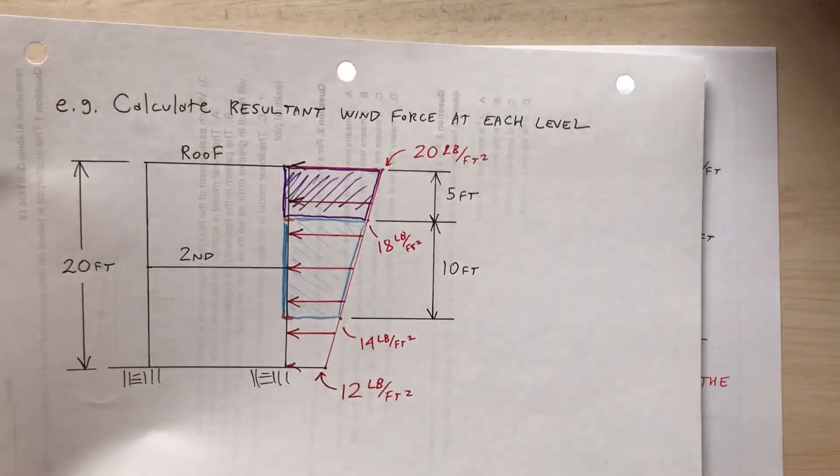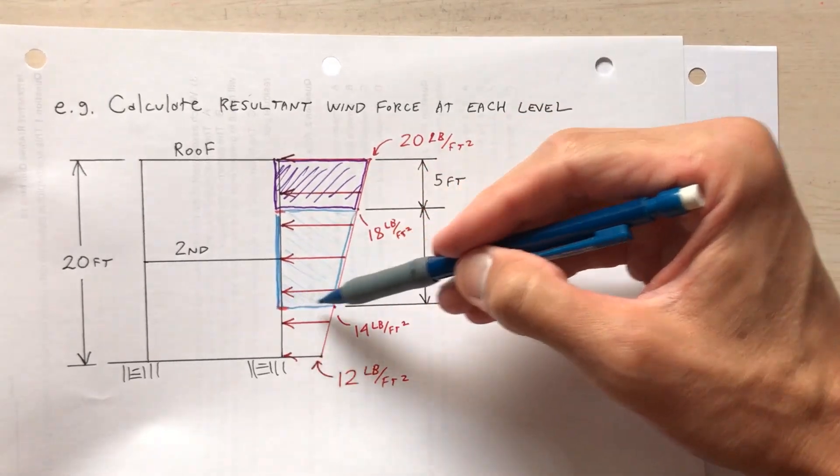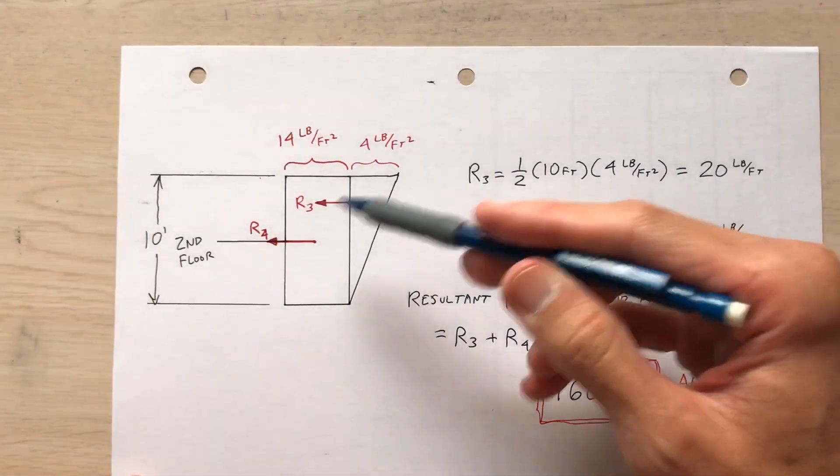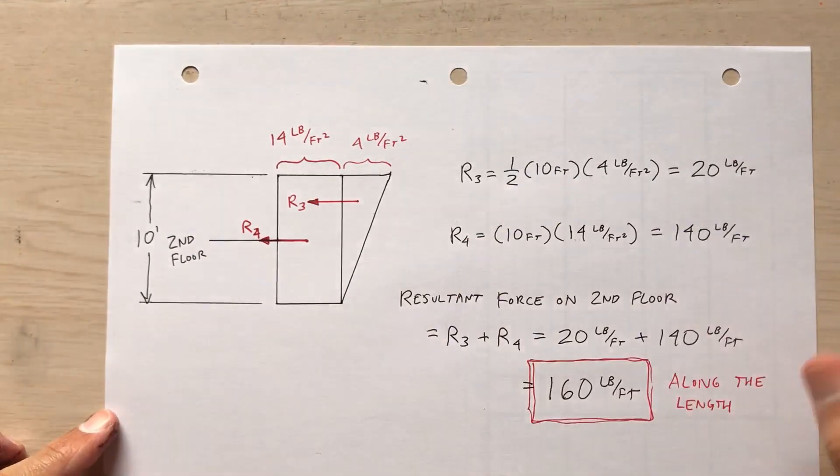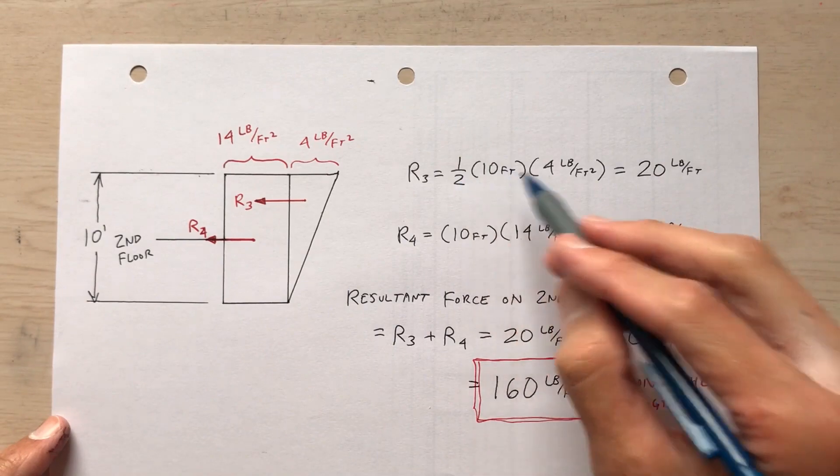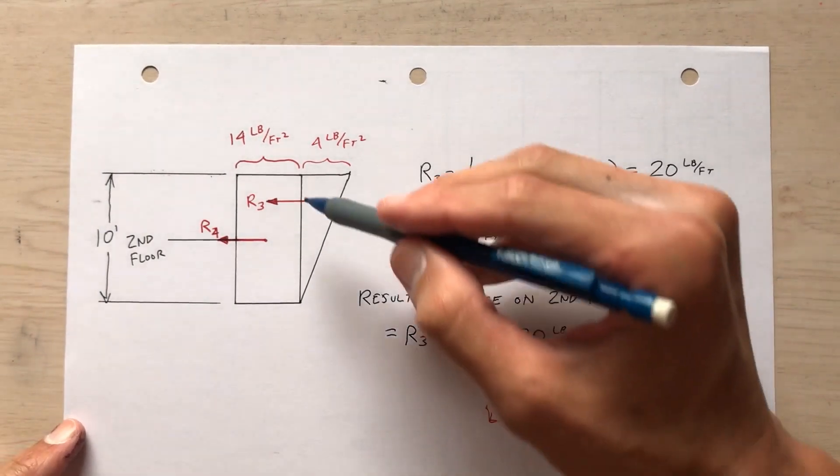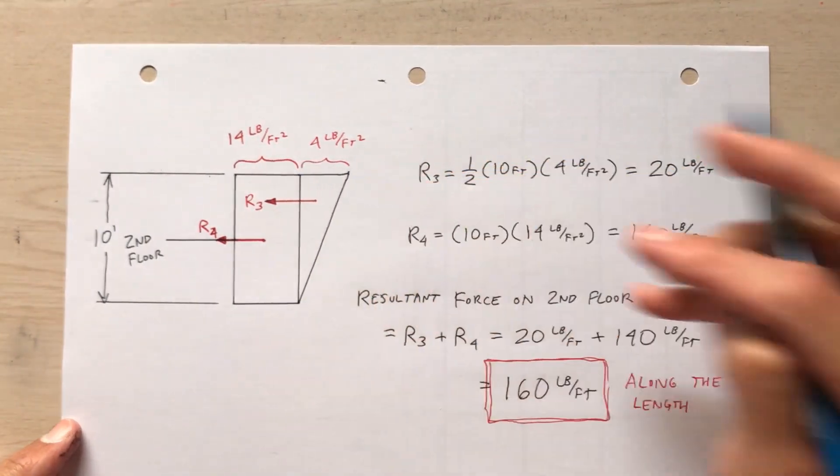For the second floor, I'm taking this trapezoidal wind load and breaking it up into triangular and rectangular. So r sub three, that's the resultant of the triangular portion, one half base times height, one half times 10 foot times four pounds per square foot.